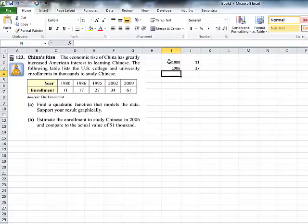You can skip ahead if you want, but you might have to type this in. 1995, 27,000. 2002, it was 34,000. And 2009, it was 61,000.